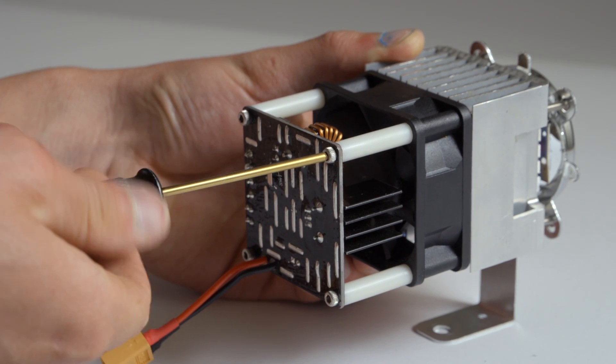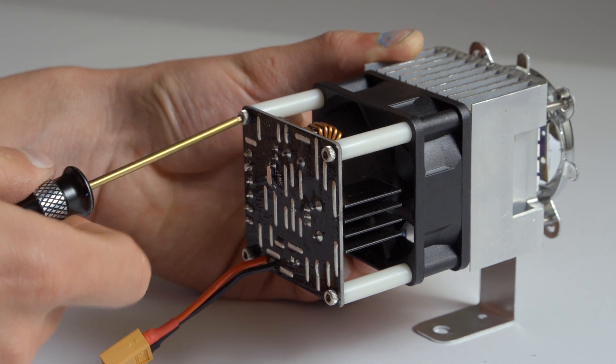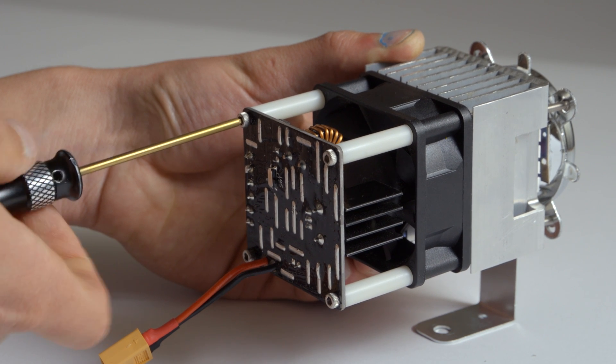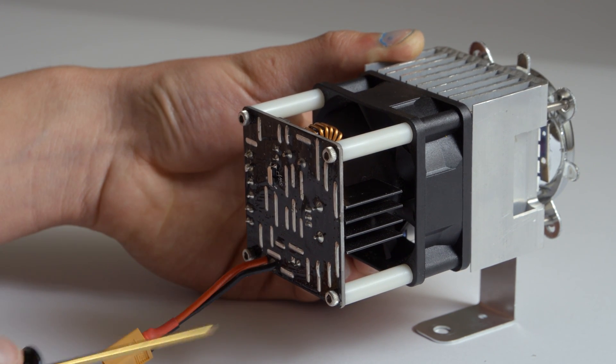The four main bolts should be just tight enough to hold everything together without any slop, but if they are too tight, they can deform the fan housing and cause the blades to rub.